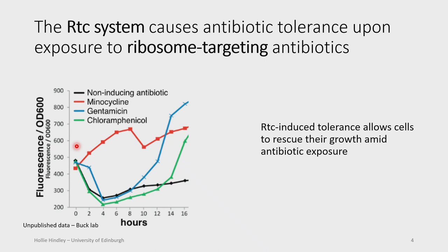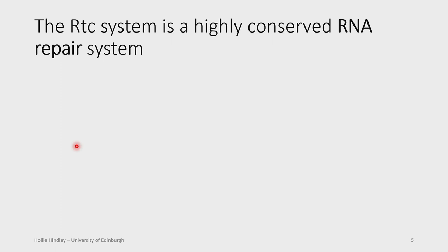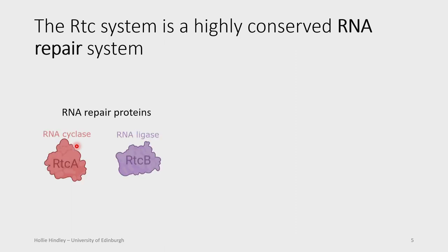So what actually is the RTC system, and why do we see that happen? Firstly, it's really highly conserved across all domains of life, so it's essential. And it's an RNA repair system. Why repair RNAs? They're quite transient molecules, especially mRNAs. However, other RNAs are not — they don't have such a high turnover rate, such as ribosomal RNAs and transfer RNAs. So it does actually make sense for the cell to repair an RNA rather than just make new ones.